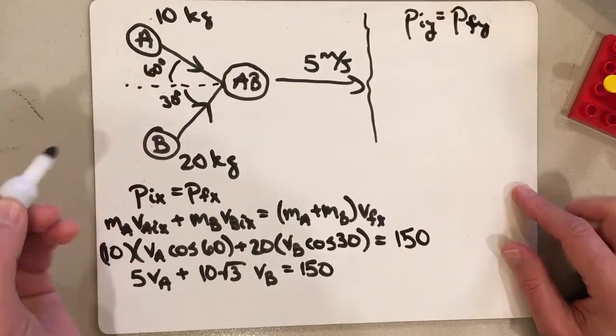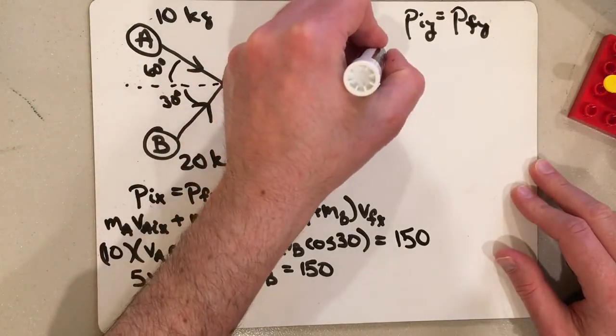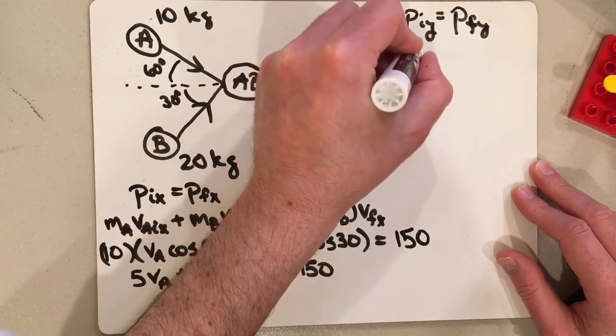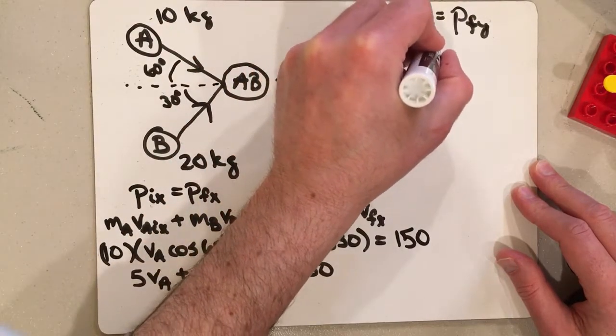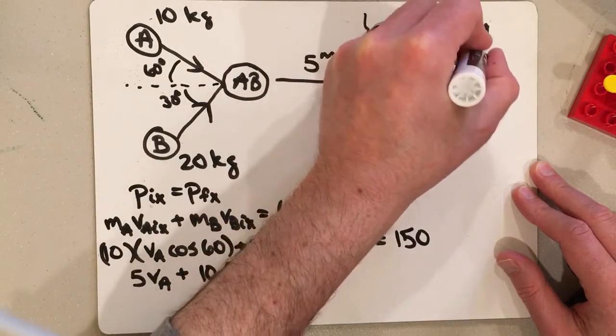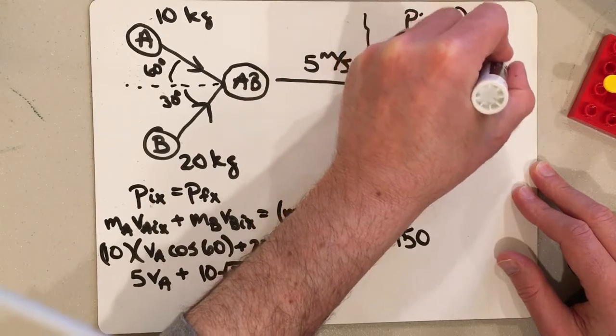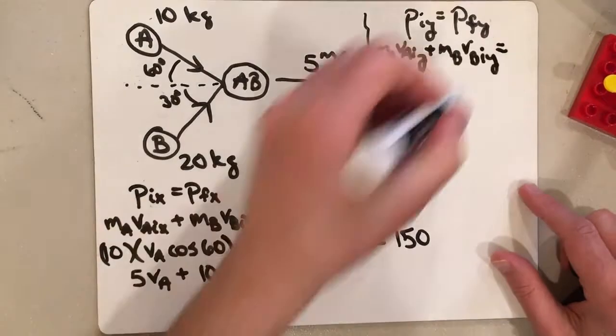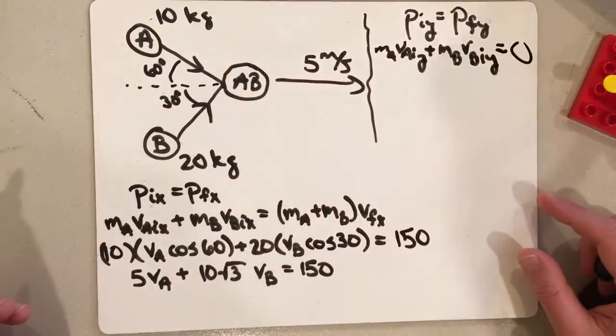In the beginning, once again, we have A and B. So it's going to be the mass of A times VA initial Y plus mass of B, VB initial Y. And at the end, there is no Y momentum, so this all has to equal zero.